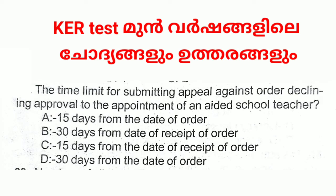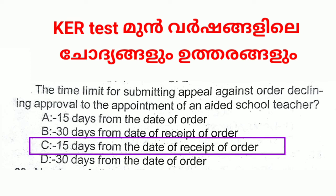The time limit for submitting an appeal against an order declining approval to the appointment of an aided school teacher: A. 15 days from the date of order, B. 13 days from the date of receipt of order, C. 15 days from the date of receipt of order, D. 13 days from the date of order. Answer: C. 15 days from the date of receipt of order.